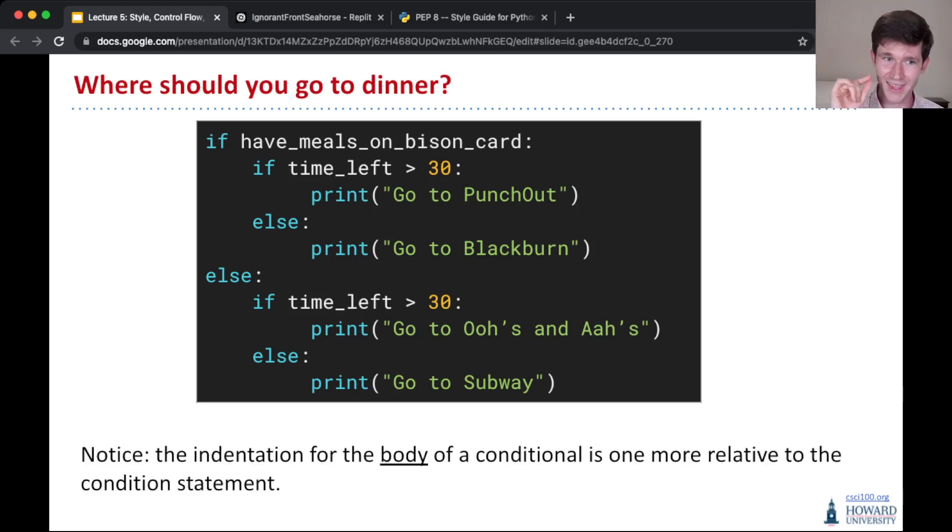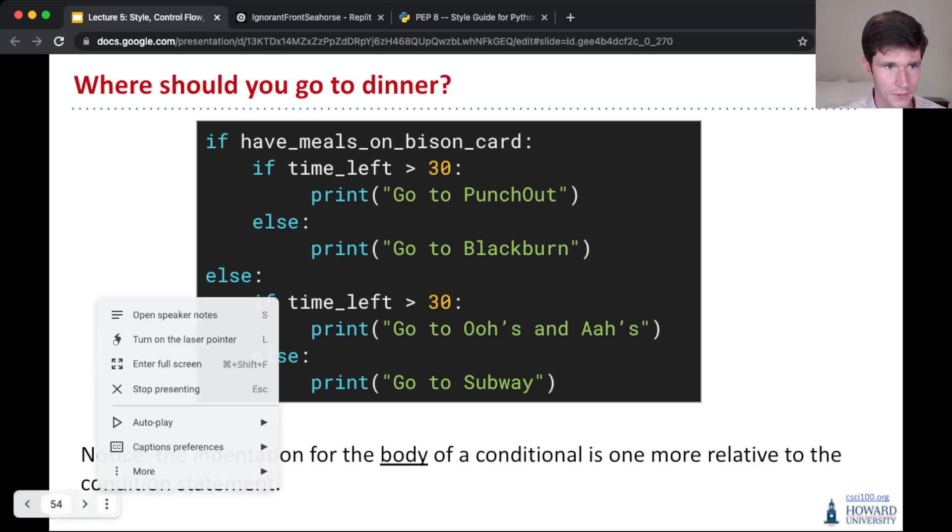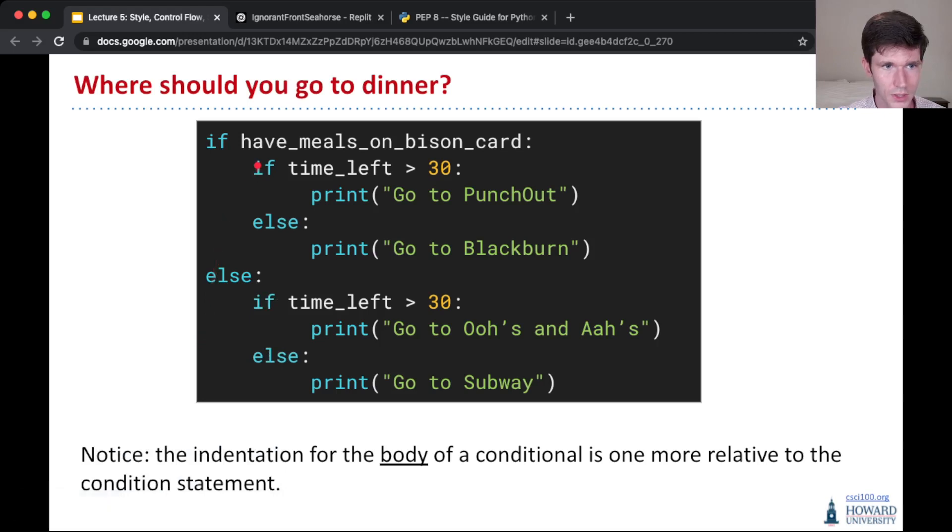Notice that the indentation for the body of the conditional is always relative to the condition statement itself. It's always one more. So it's not like the absolute number is an indent of one. It all depends on where the condition itself, where the condition is checked, what the indent is there. And so you have right here, you know that all of this here is part of the if-case because it's all indented at least by one. And all of this is part of the body of the else-case because it's all indented by one.